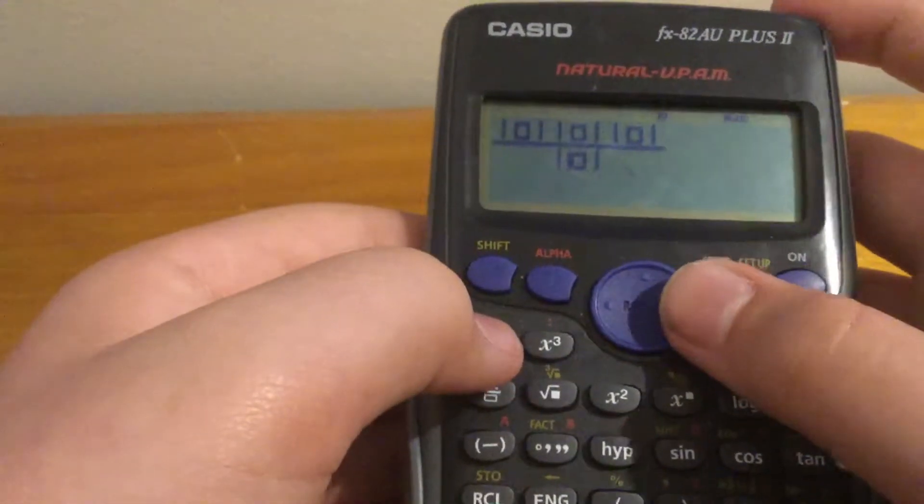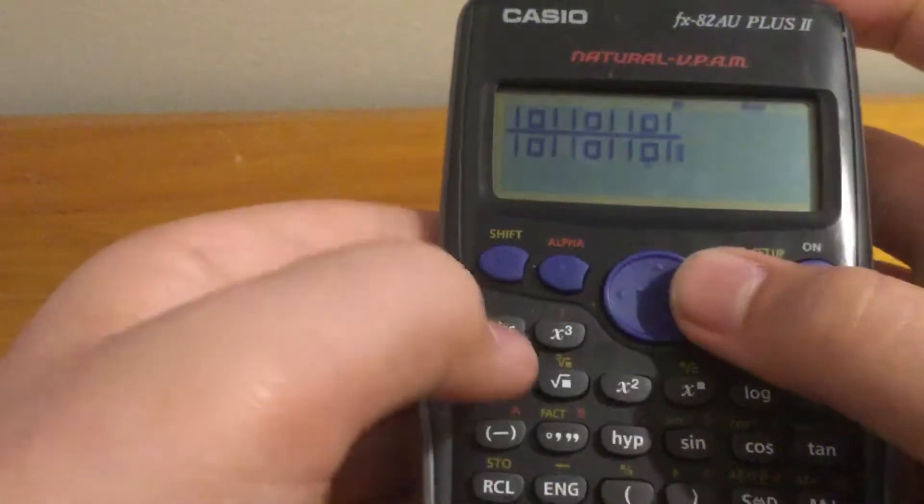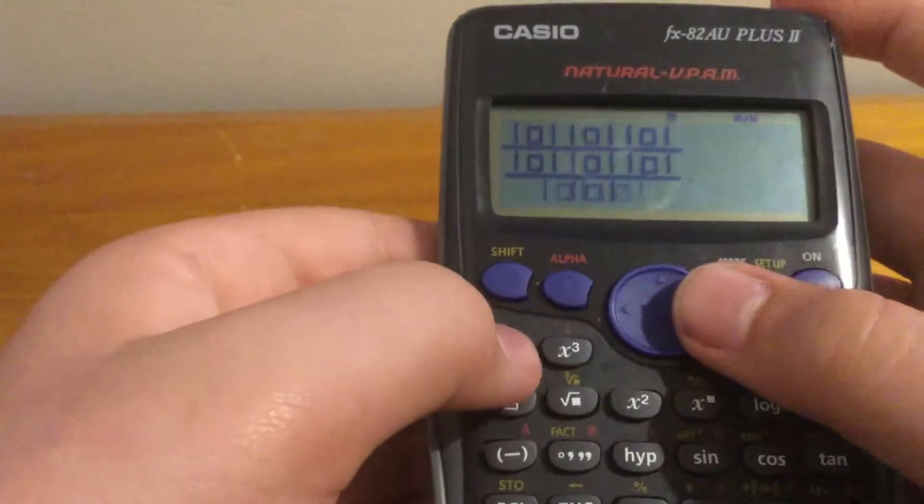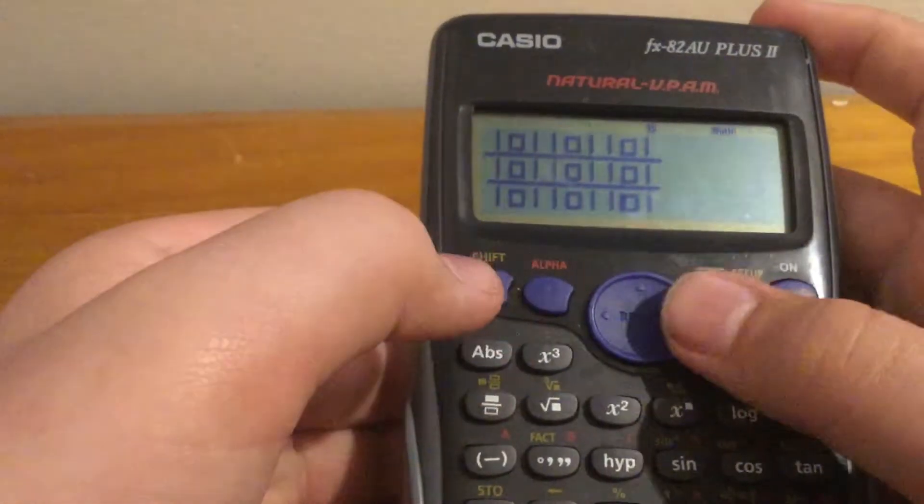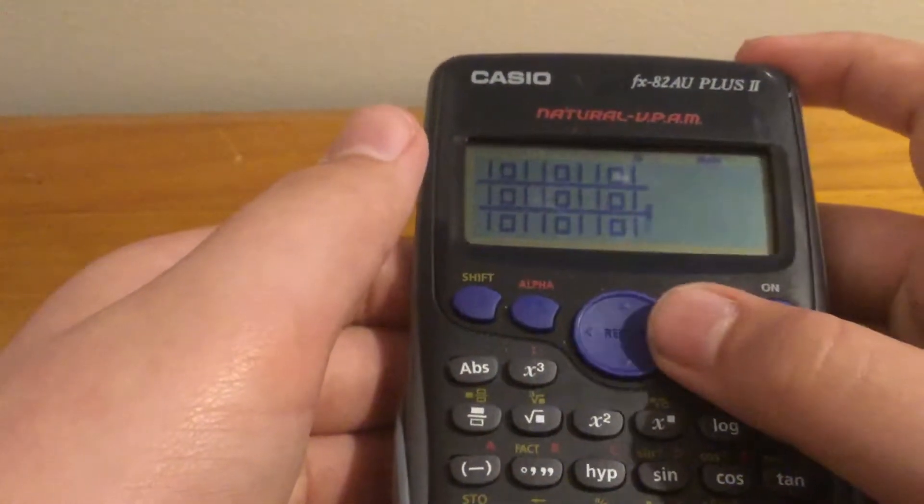Then you're going to press ABS, right, ABS, right, ABS, right, fraction, and then ABS, right. Then you've got your Noughts and Crosses playing field here.